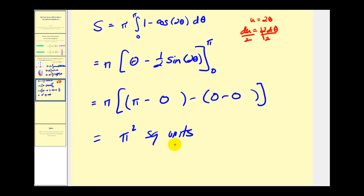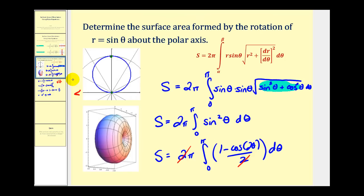Looking back at our solid: rotating this curve about the x-axis produces a pinched torus with a surface area of pi squared square units. That'll do it for this video. Thank you for watching.